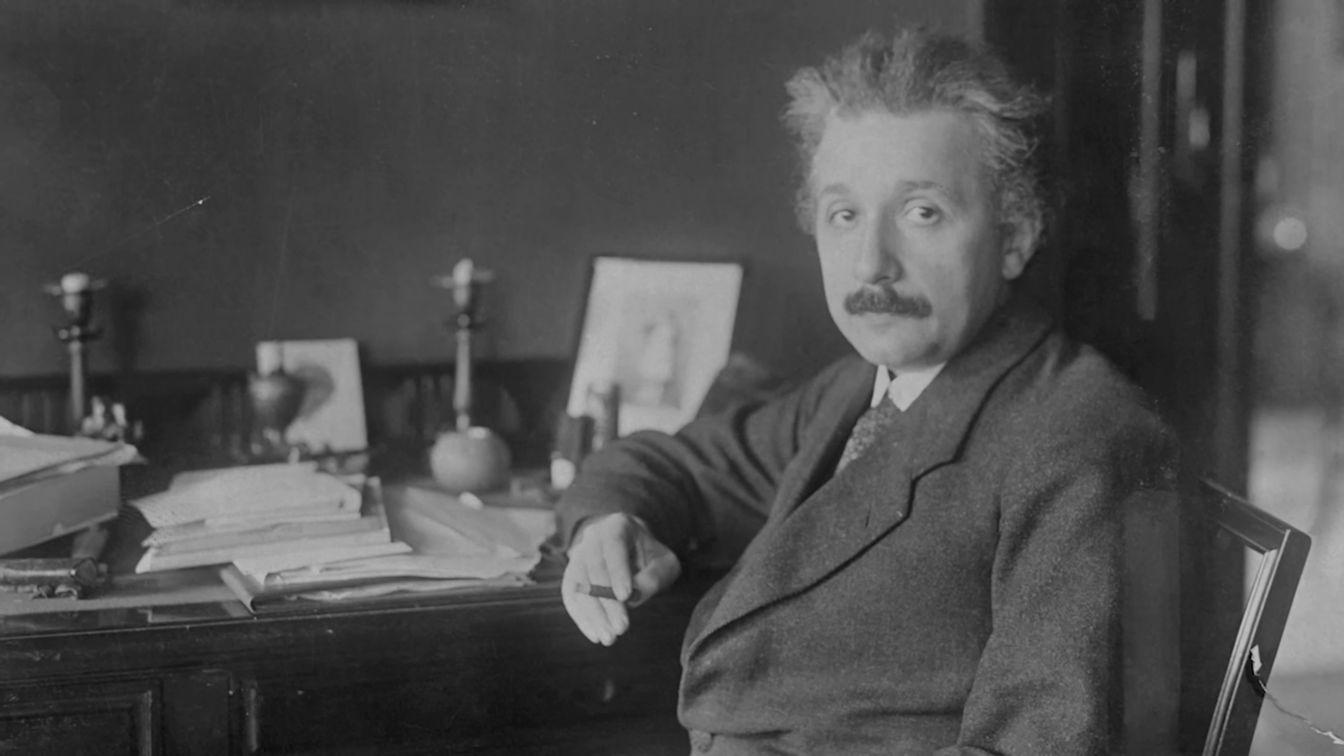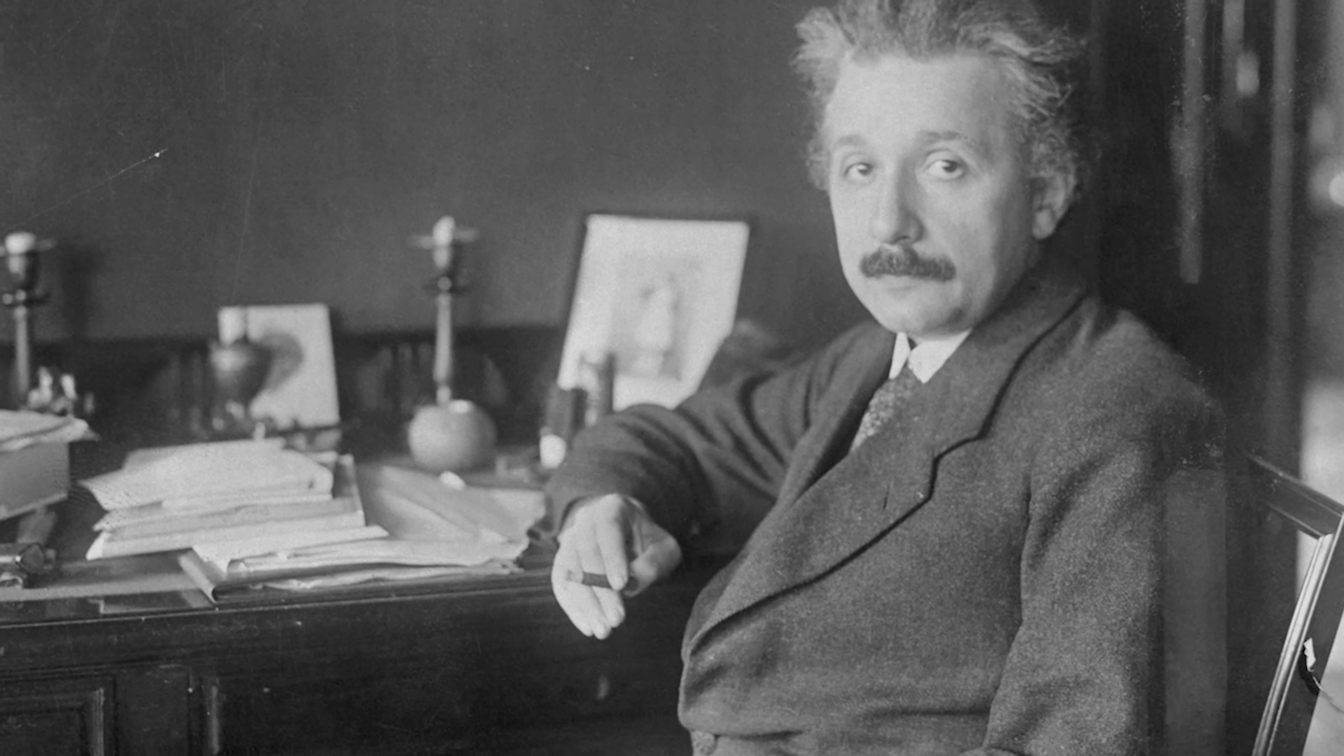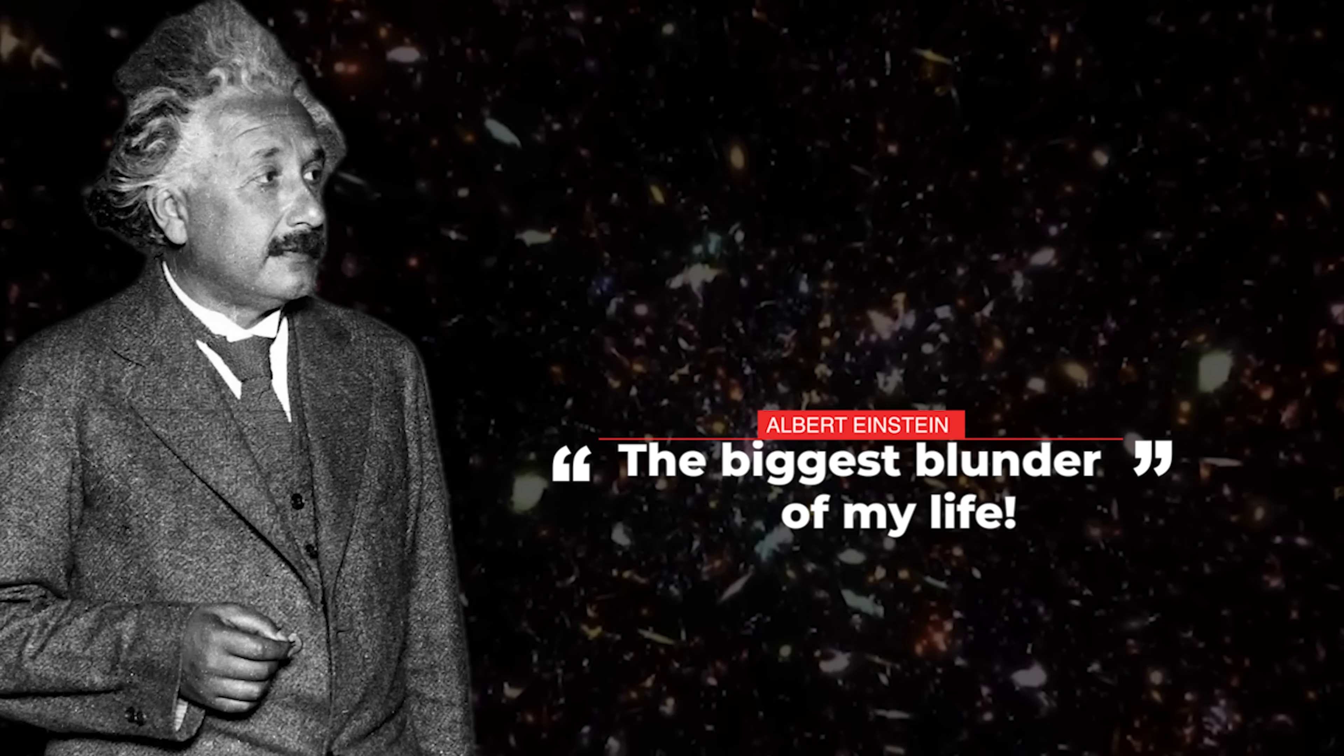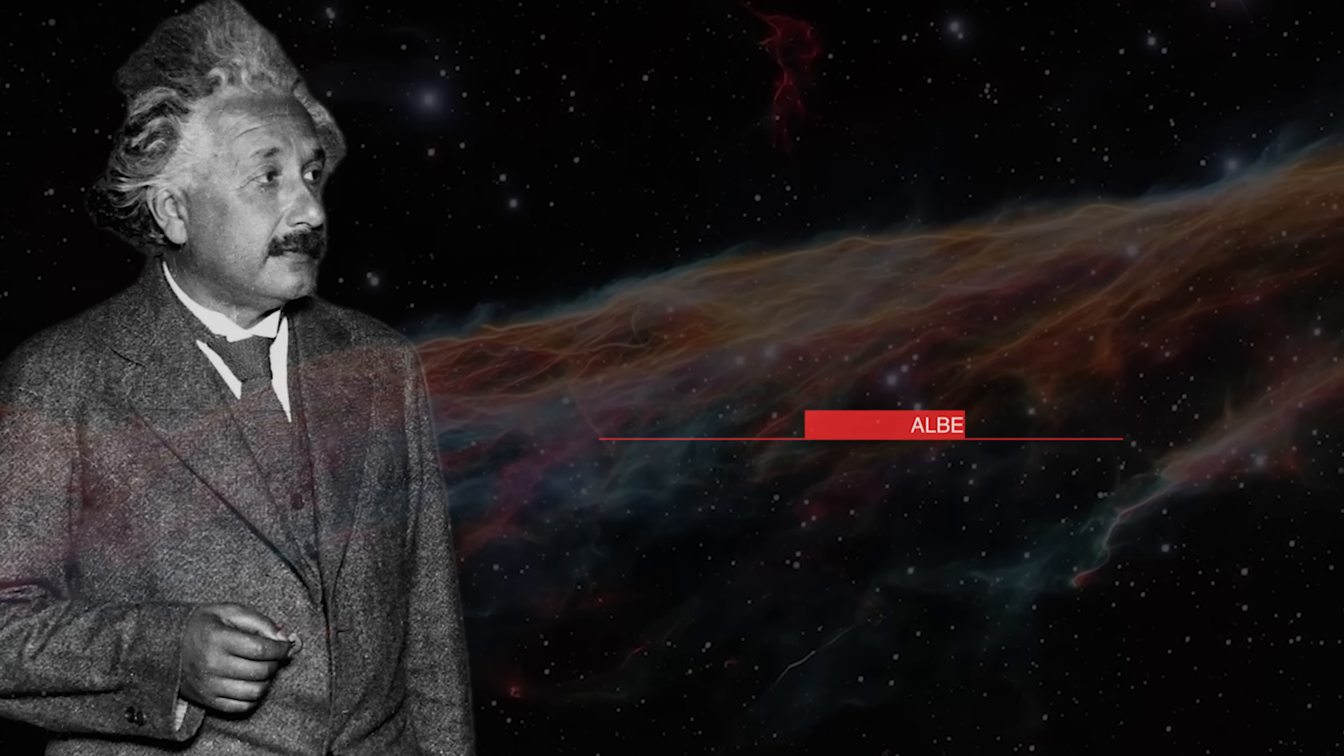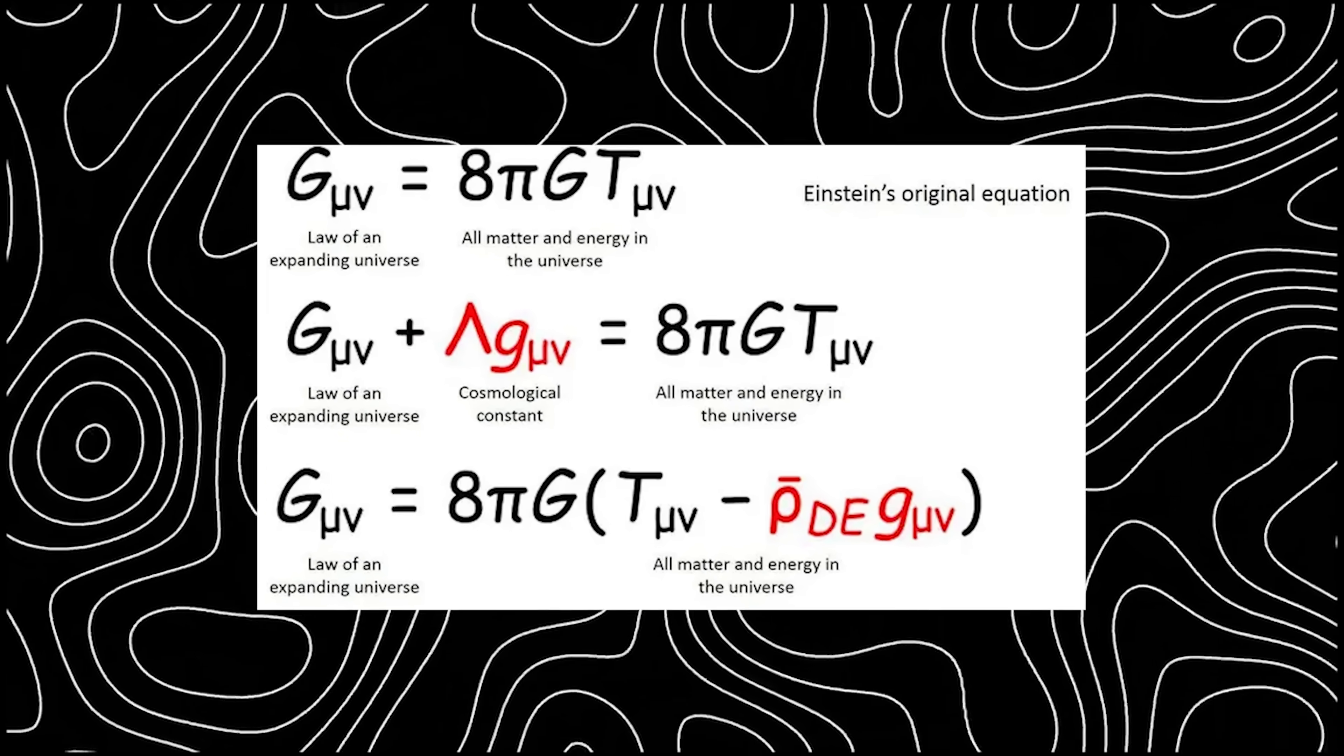Most people remember Albert Einstein for revolutionizing physics with his theory of relativity, but few know he once called one of his own ideas the biggest blunder of my life. That idea? The cosmological constant, a term he added to his equations to keep the universe static.